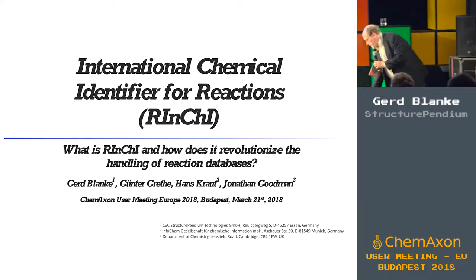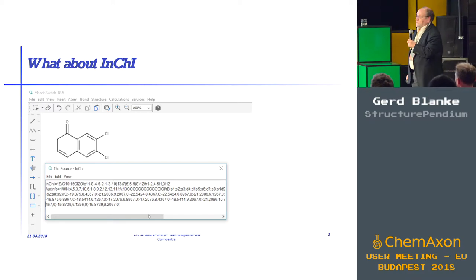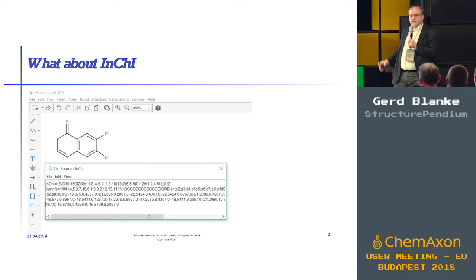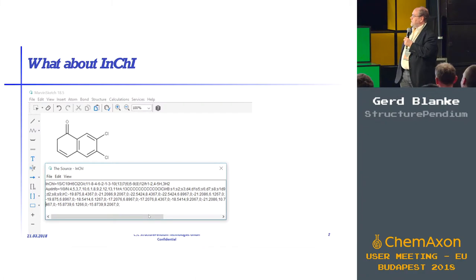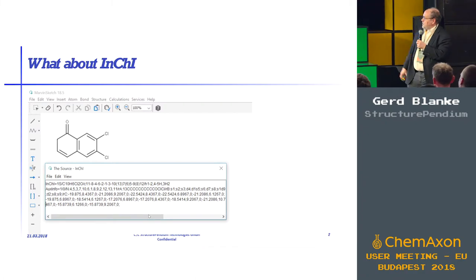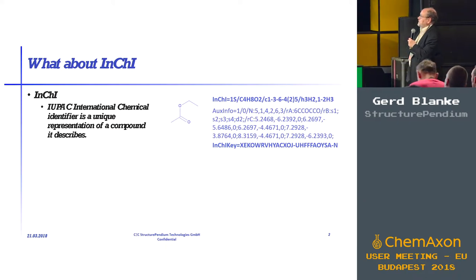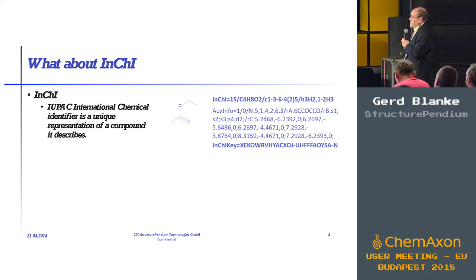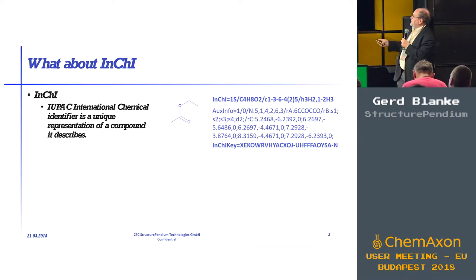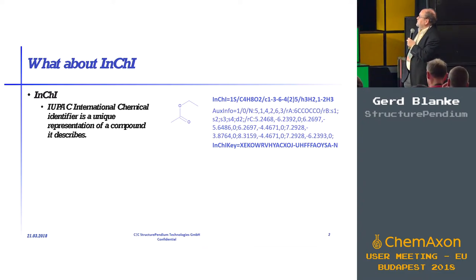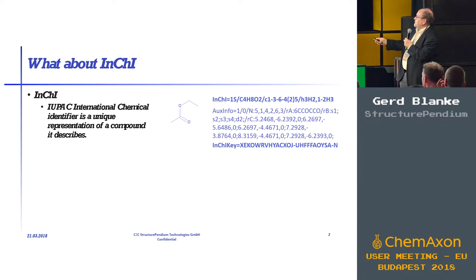The starting point is that most of you know, hopefully, what an InChI is and that you can create it by drawing a structure and then press the right button to get the InChI that is defined over here. The so-called IUPAC International Chemical Identifier is set up to have a unique string, a unique representation of a chemical structure.